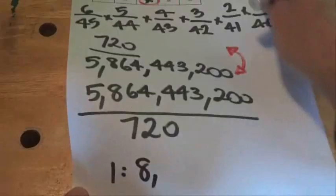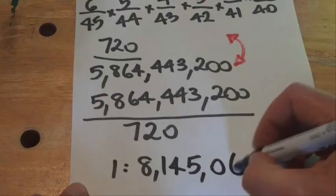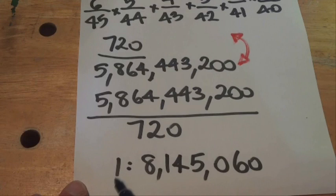So the odds of winning the lotto when selecting 6 numbers out of 45 is 1 chance in 8,145,060.